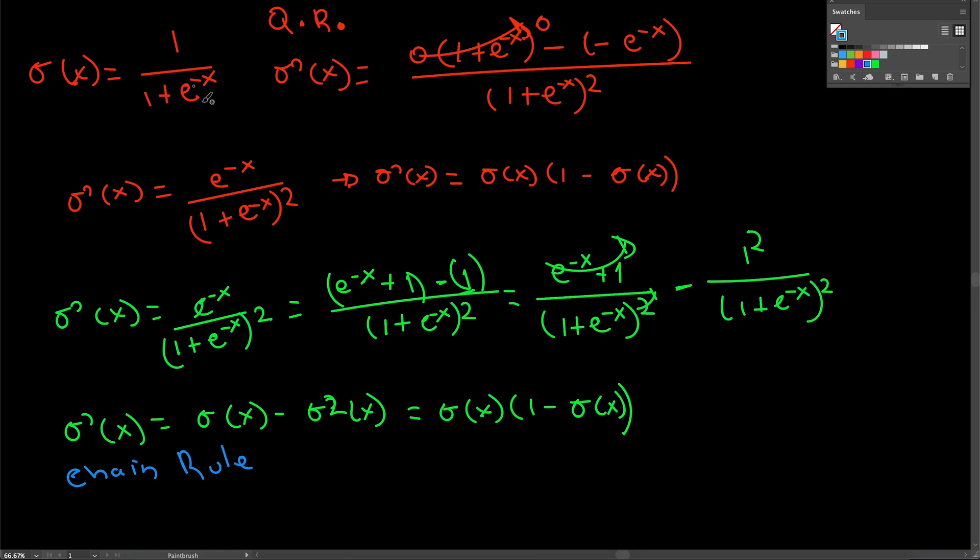And just to help you out a little bit on how to use the chain rule, let me just rewrite the sigmoid function for you. It is 1 plus e to the minus x to the minus 1. Of course, this is easy to see that this is equivalent to this. So just apply the chain rule here and you should arrive to this right here and then from here try to work yourself out and arrive the same way that I did in the video.